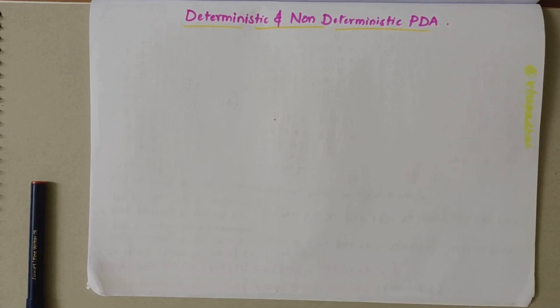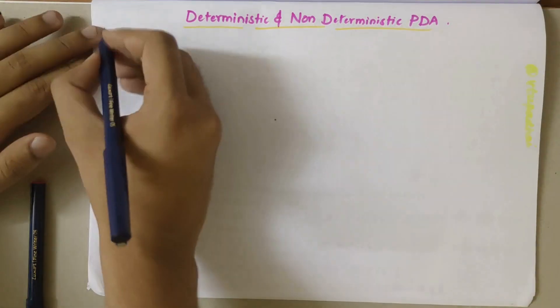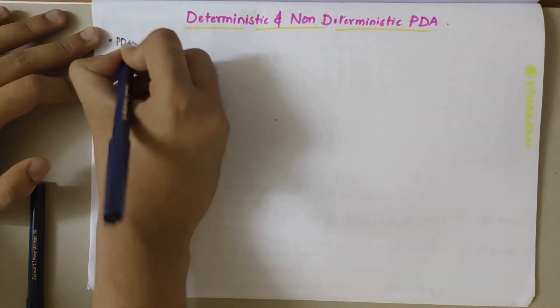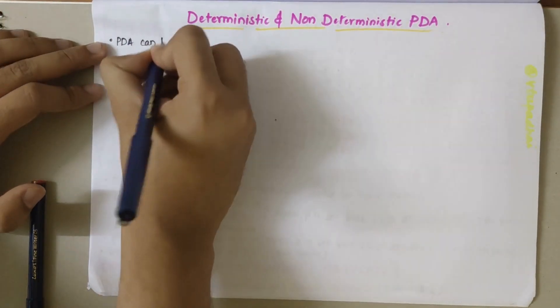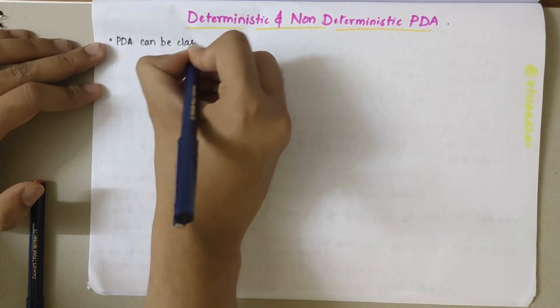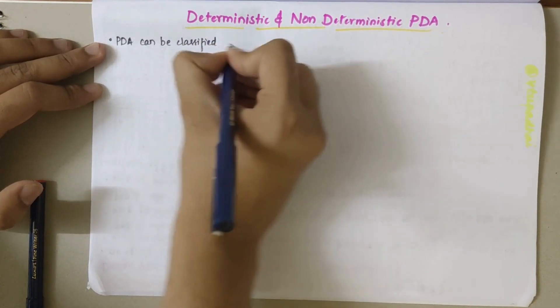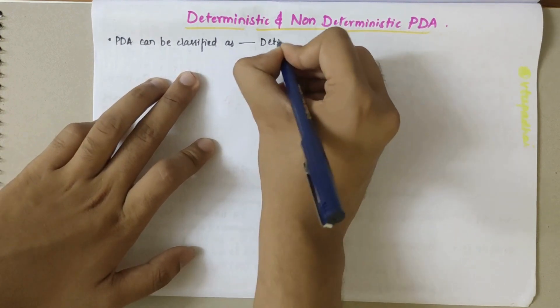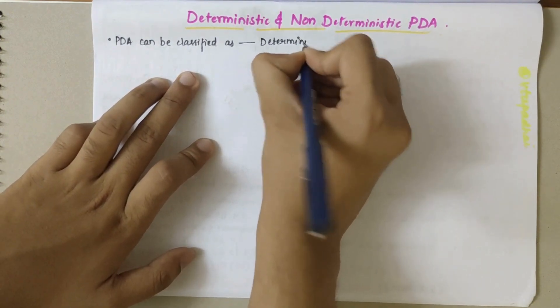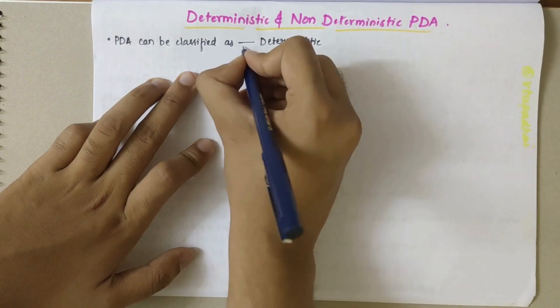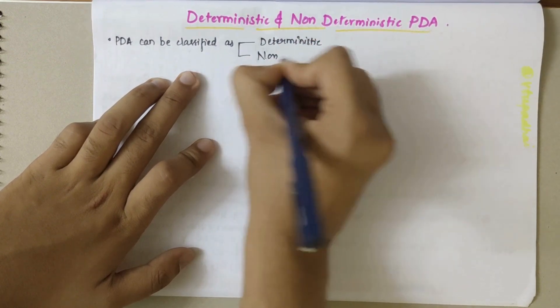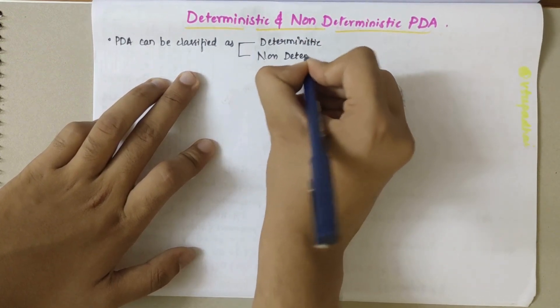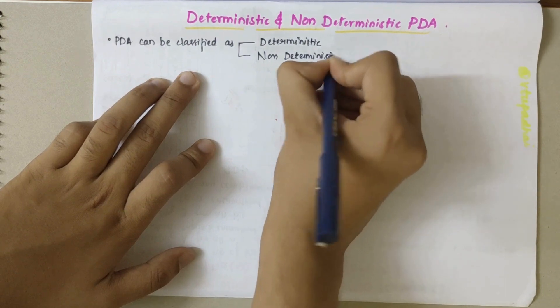In this video, we'll be looking into deterministic and non-deterministic PDAs. Firstly, PDA can be classified as deterministic PDA and non-deterministic PDA.